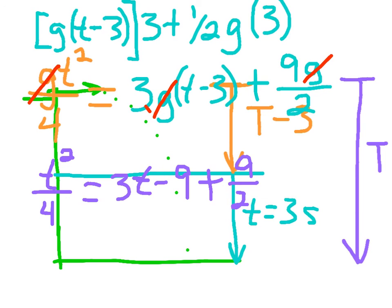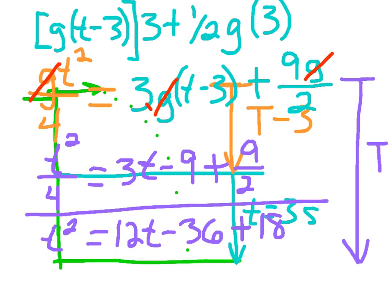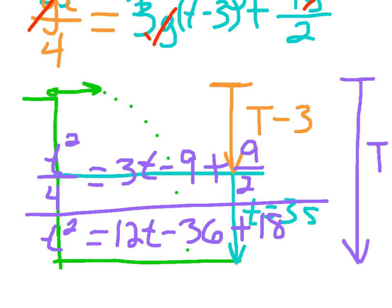Now, the next thing I'm going to do is multiply everything by four. And when I multiply everything by four, that gets rid of all of my denominators. So I multiply this by four, and that's going to give me T squared. And that's equal to three times four, which is 12 T, minus nine times four, which happens to be 36. And then four times nine is 36, and 36 divided by two is 18.